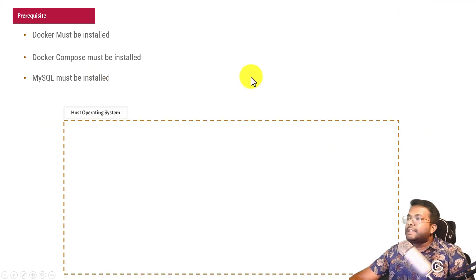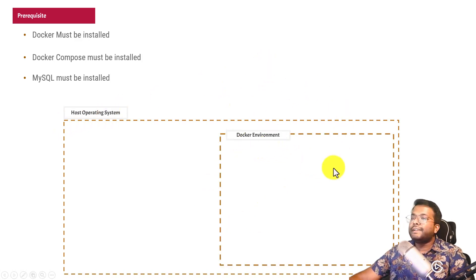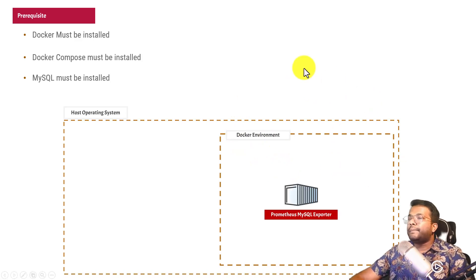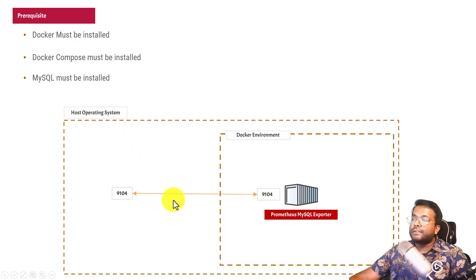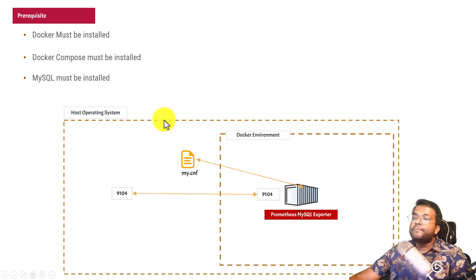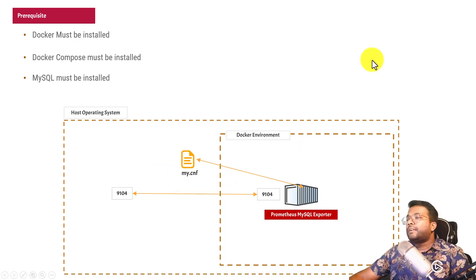Once all prerequisites are completed, let's understand what we are going to do. There will be a host operating system and a Docker environment. Whenever you install Docker it creates an environment where your Docker containers are deployed. We will create a Docker container for the Prometheus MySQL exporter, exposed on port 9104 inside the Docker environment, mapped to port 9104 on the host operating system. We will also write a MyCNF file containing the authentication details for MySQL. When the Prometheus MySQL exporter container runs, it will read this MyCNF file from the host to gather configuration for connecting to the MySQL instance.